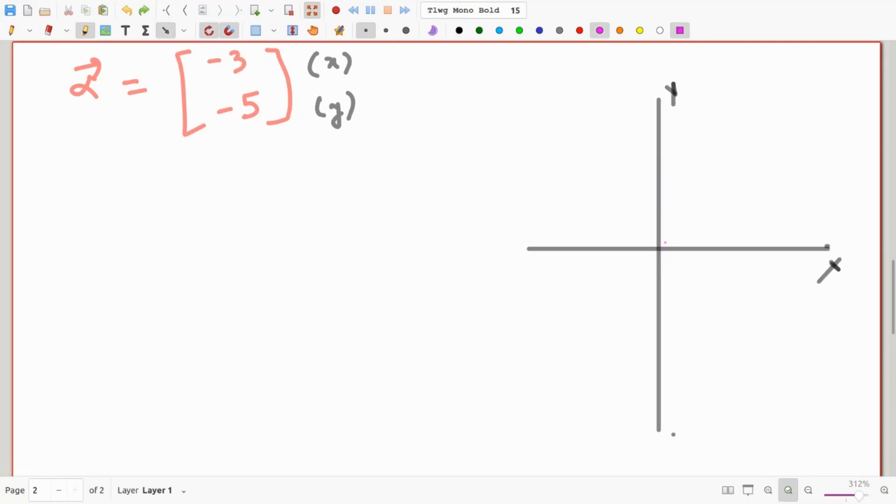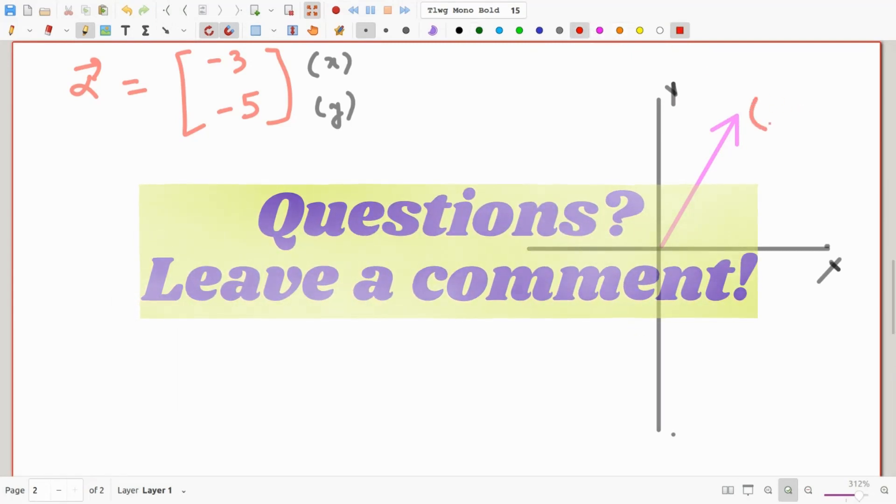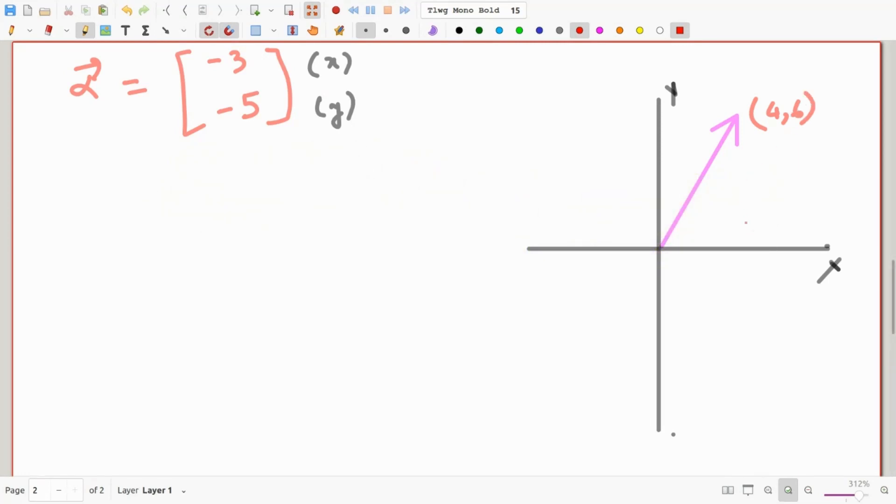Now let's look at another example. Let's say the vector beta and let's say it has the components 4, 6. Well, that simply means we are moving over 4 along positive x-axis and up 6 along positive y-axis. And of course we could have written this as a column vector, which is 4, 6.